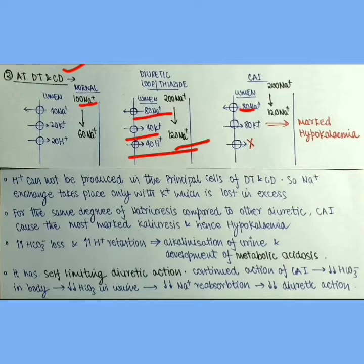Here it is important to note that H+ cannot be generated in the principal cells which are the cells present at DT and CD because source of H+ is carbonic anhydrase enzyme and it is already inhibited. So only 80 K+ is secreted to maintain the charge and no H+ is secreted. H+ is spared or preserved. So we can see that there is marked potassium loss producing marked hypokalemia.